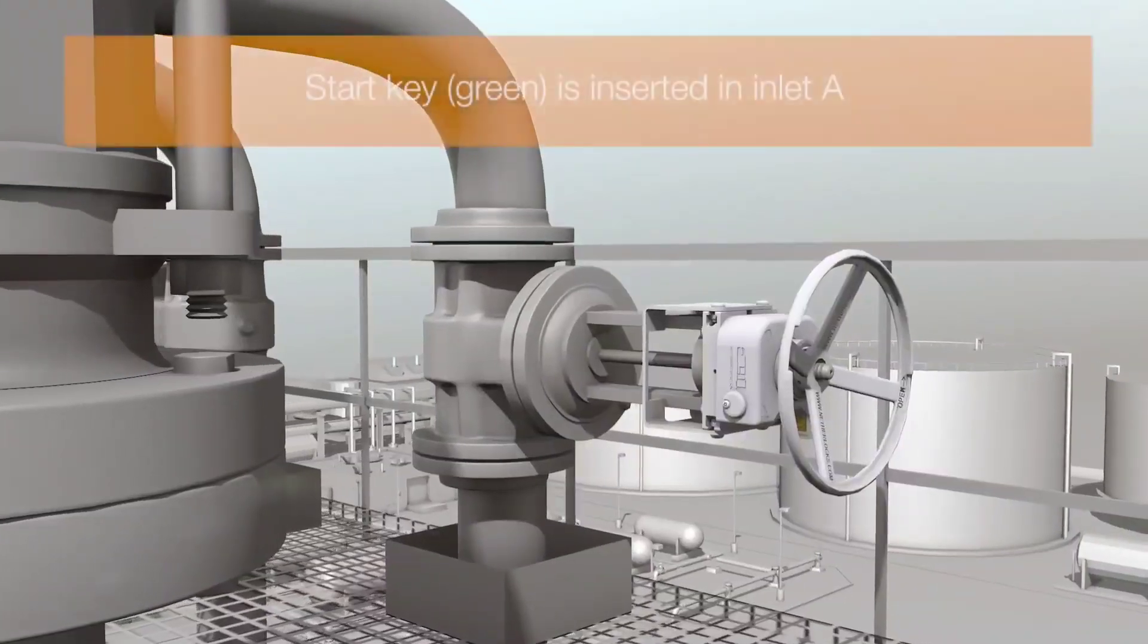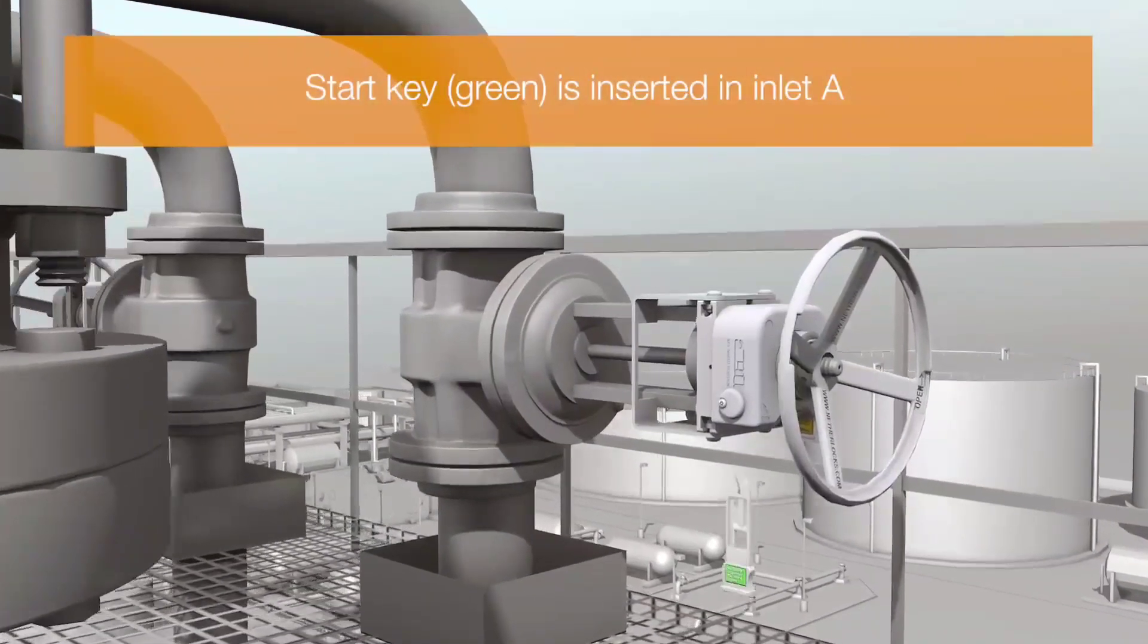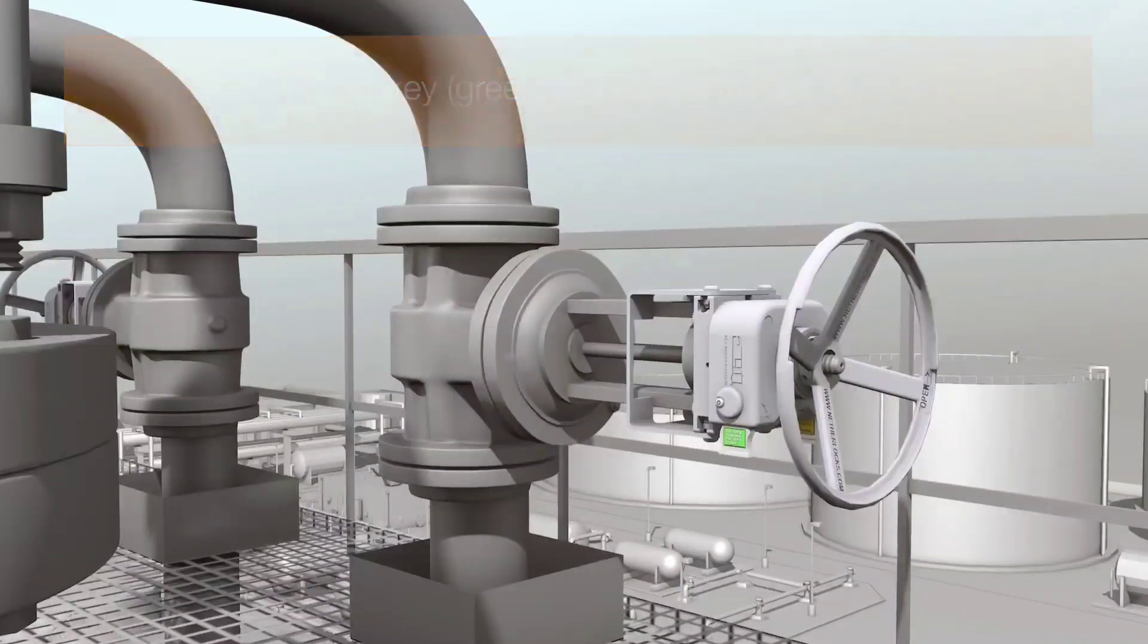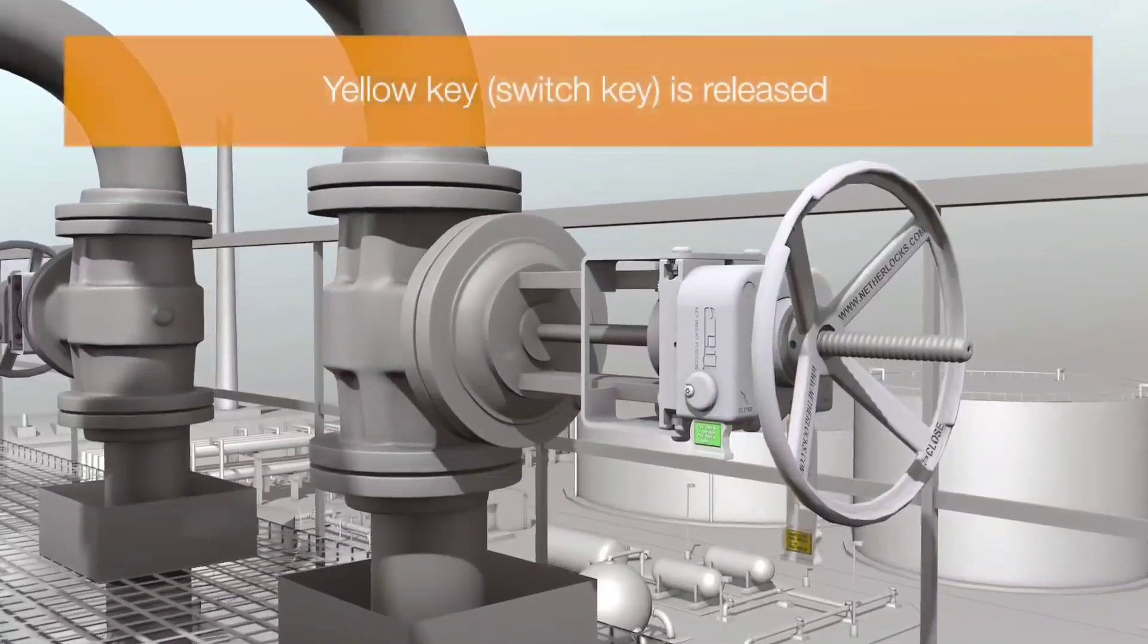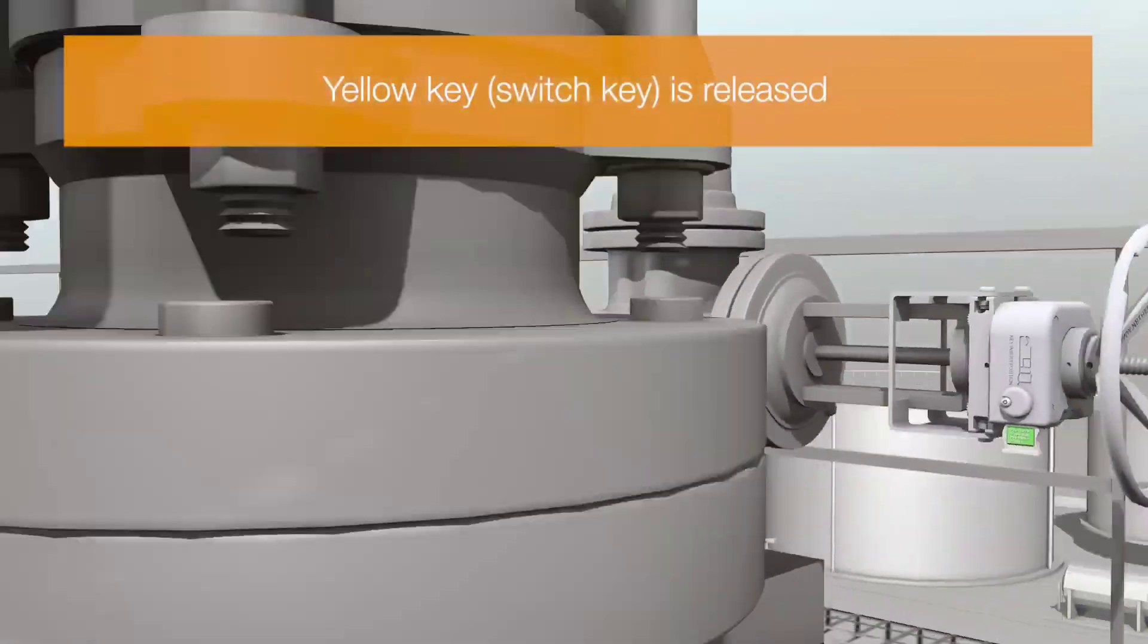The start key unlocks inlet valve A. Another key is trapped inside. Once inlet valve A is opened, the start key is trapped and the second key released.